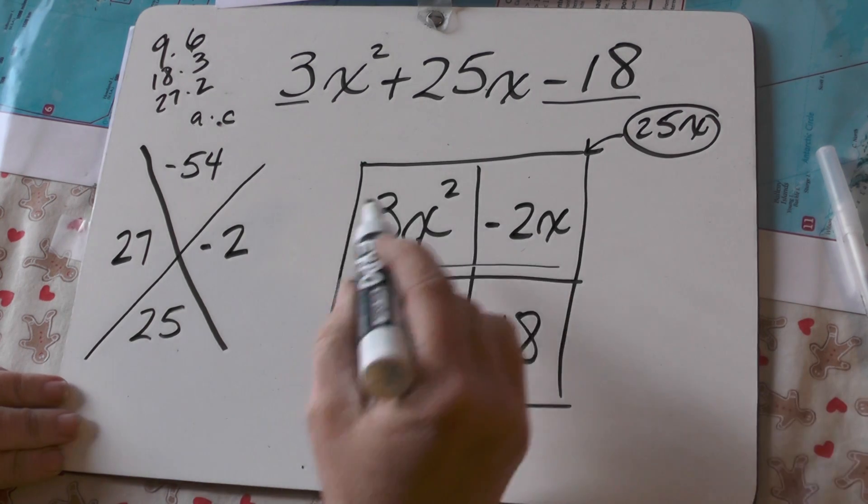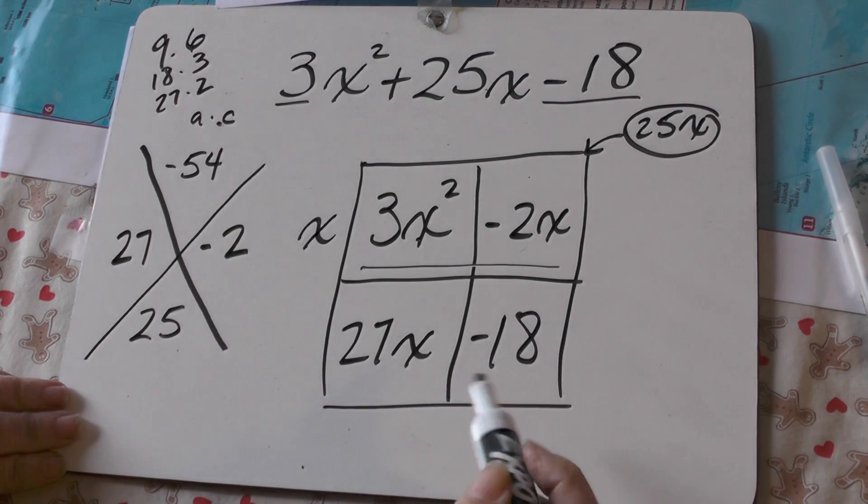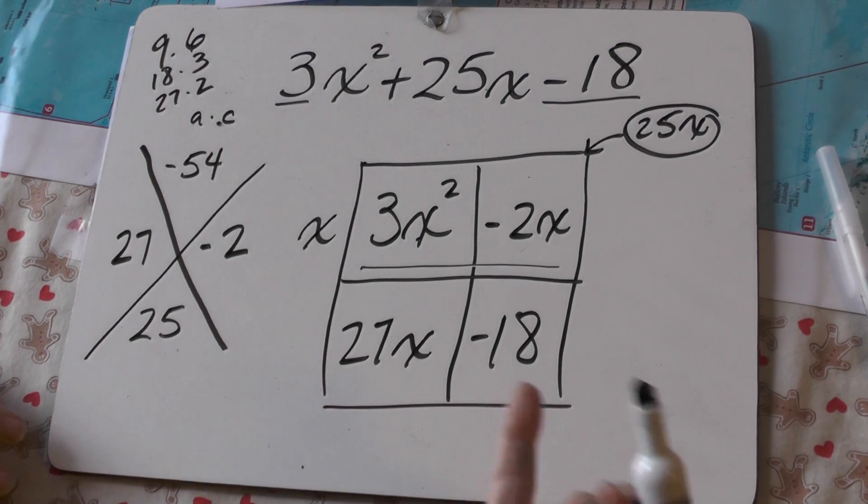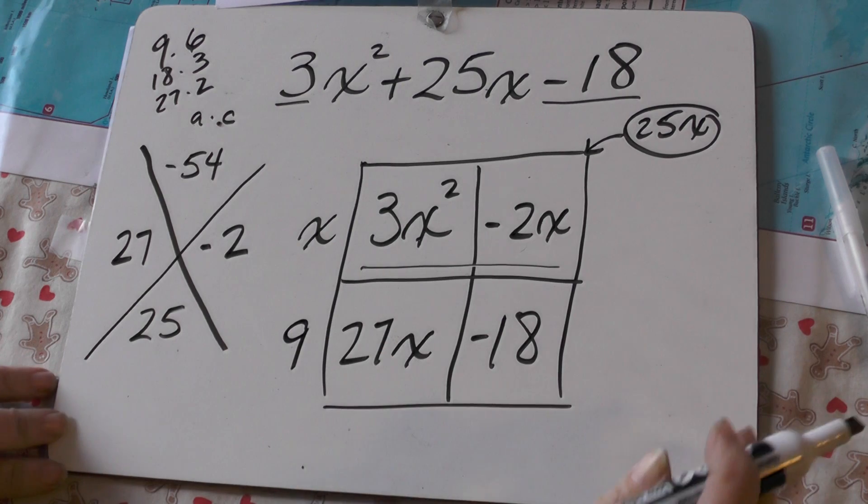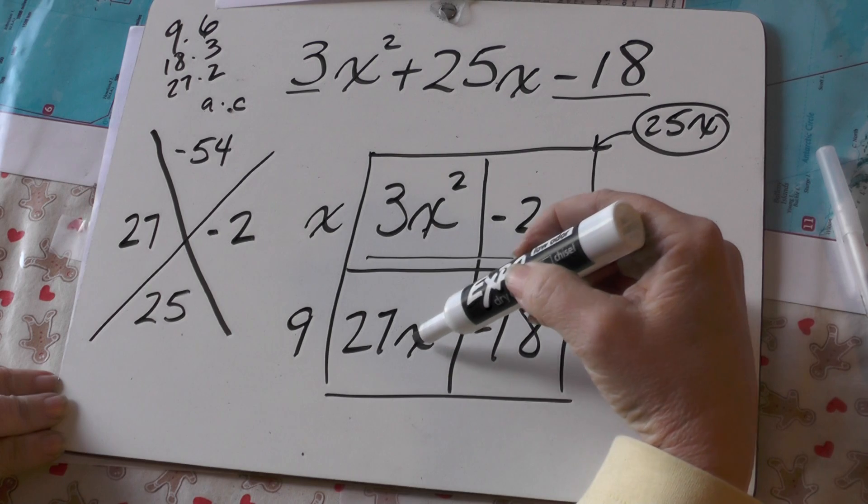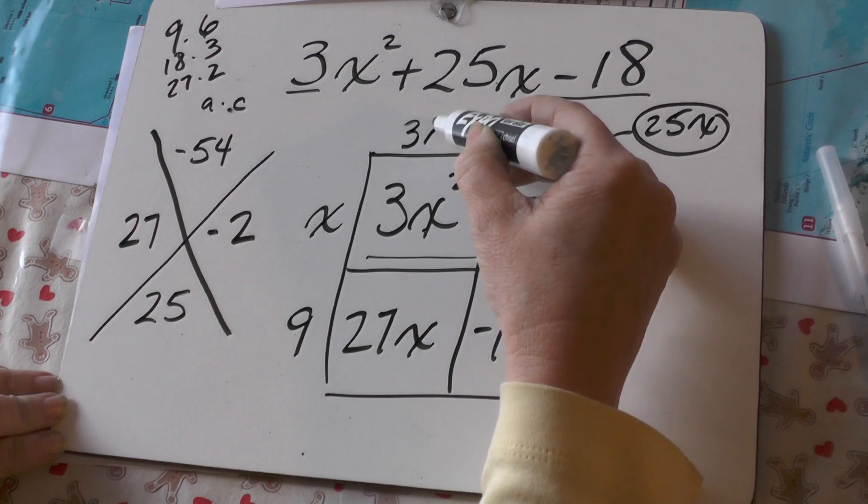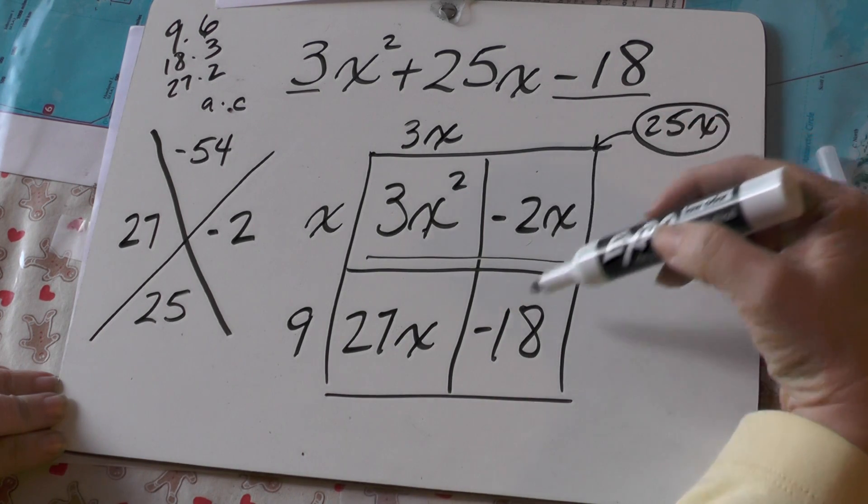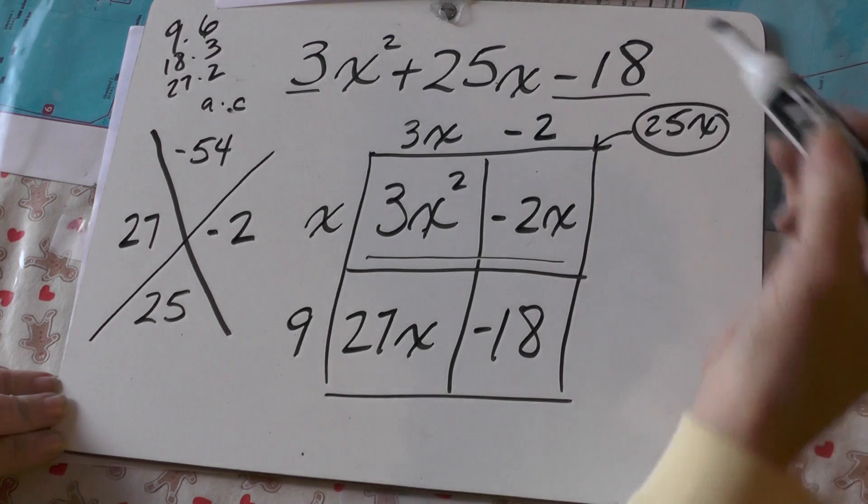What can I factor out of 27x and negative 18? I could factor out a 9, right? Okay. And what can I factor? I'm going to go this way. What can I factor out of 3x squared and 27x? Well, they both have a 3x in them, right? And if I go this way, what can I factor out of negative 2x and negative 18? They both have a negative 2 in them, okay?